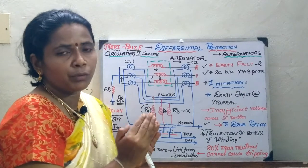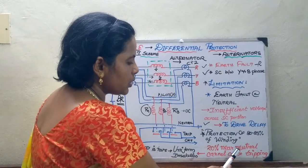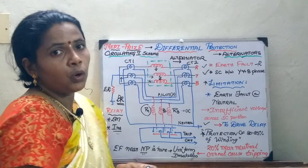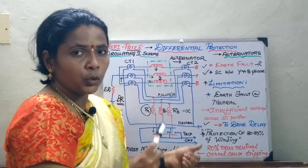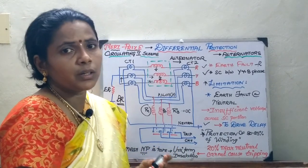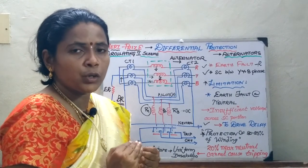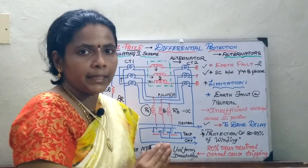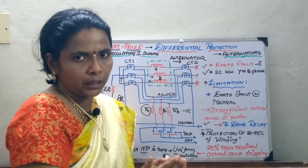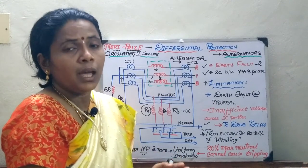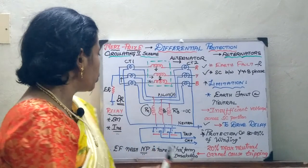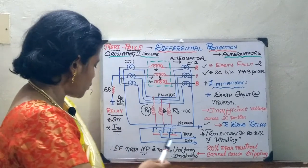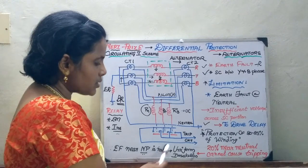Only about three-quarters of the winding can be protected; the remaining 20% near the neutral cannot cause tripping because insufficient voltage drives the relay. However, this is not a major concern because for earth faults near the neutral, uniform insulation is provided throughout the winding, and faults occurring near the neutral point are quite rare.